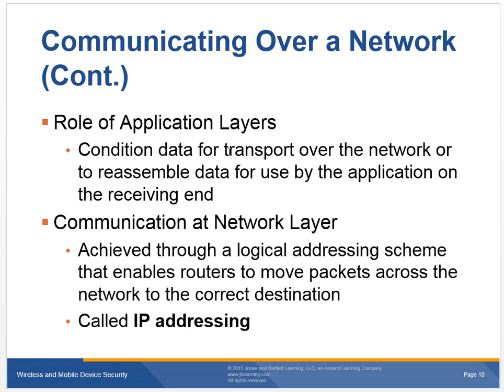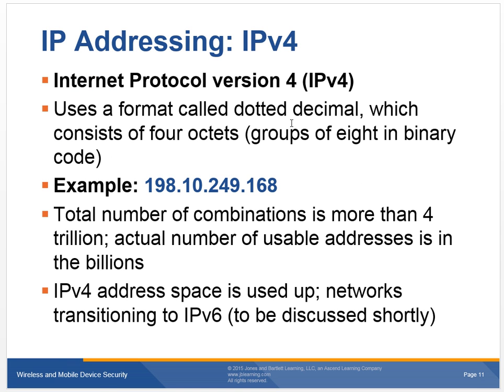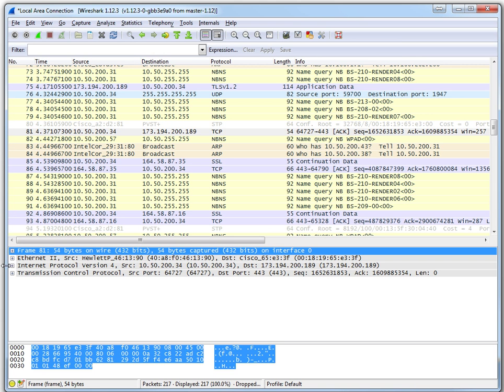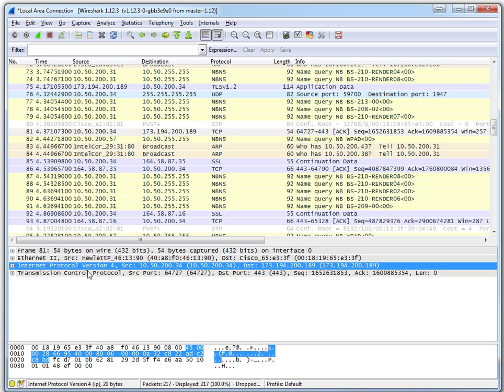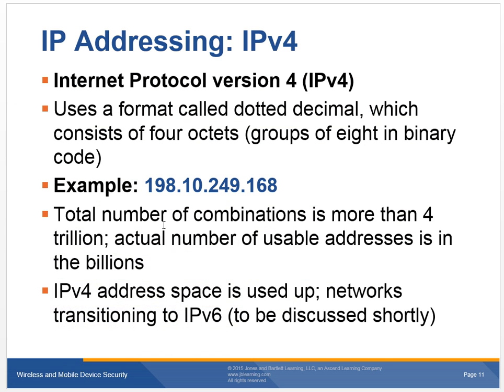How does it get there? IP addressing is the important part — think of it like an address on a letter: you have the name, the street, the city, state, and zip. That is how we address a letter. Computers address differently. This is IPv4, and you can see this packet is actually using IP version 4. It uses a format called dotted decimal.